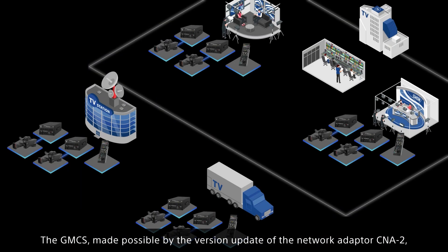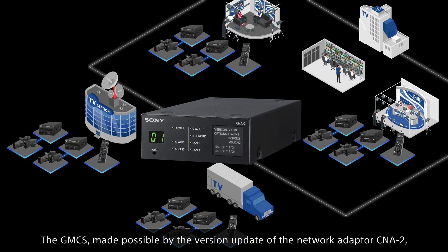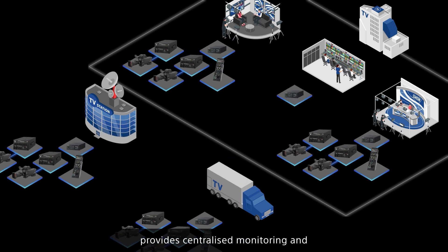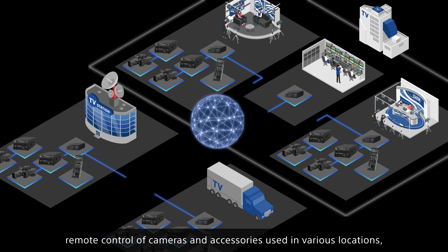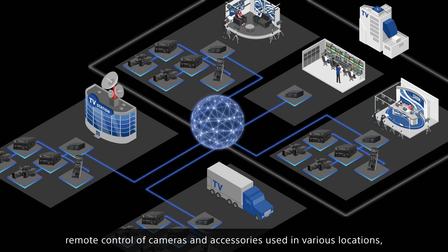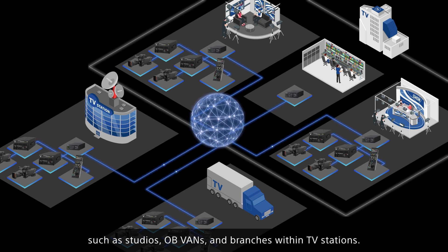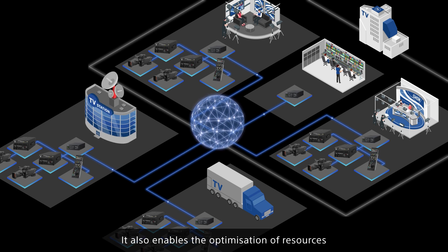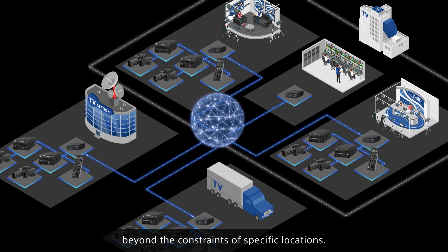The GMC-S, made possible by the version update of the network adapter CNA2, provides centralized monitoring and remote control of cameras and accessories used in various locations, such as studios, OB vans, and branches within TV stations. It also enables the optimization of resources beyond the constraints of specific locations.